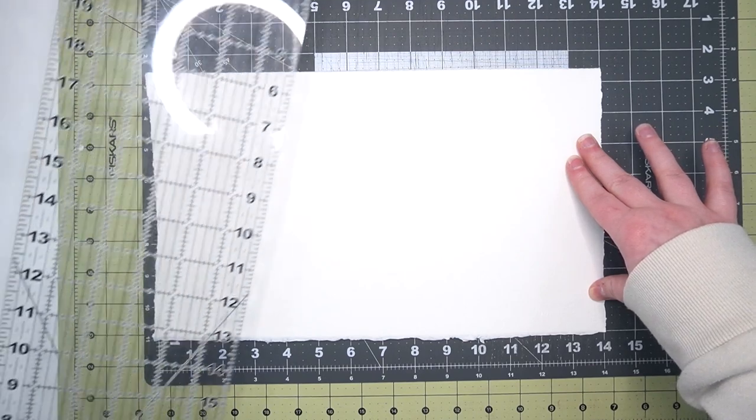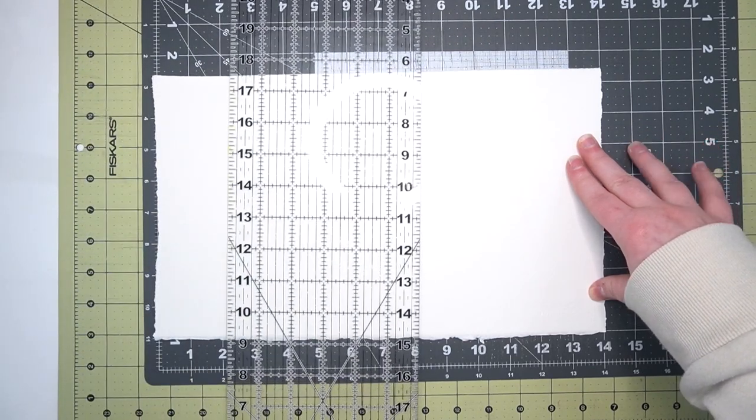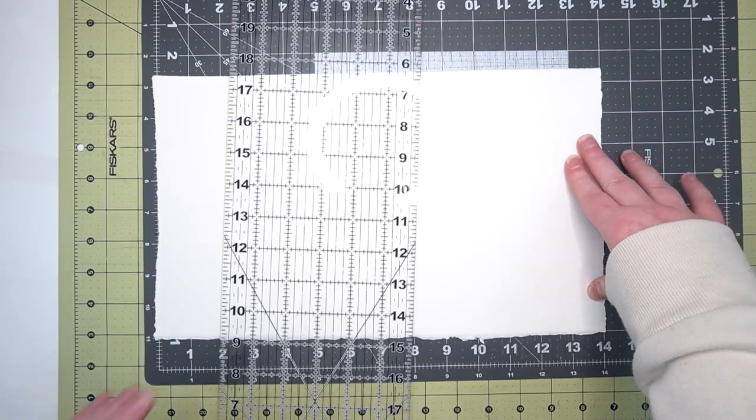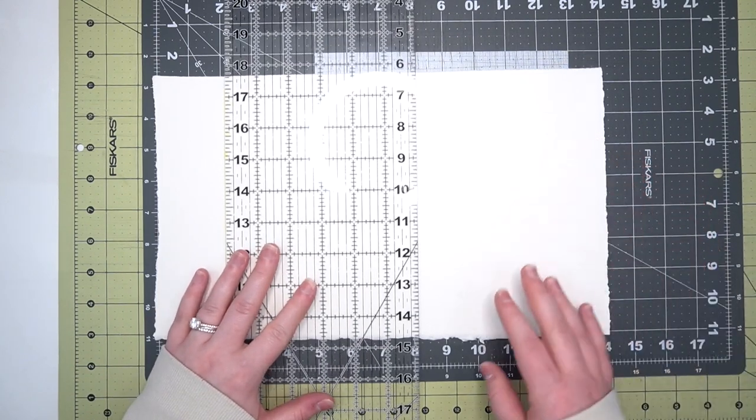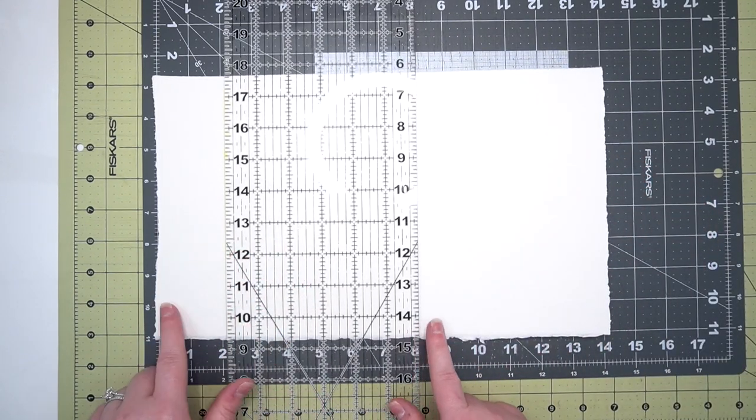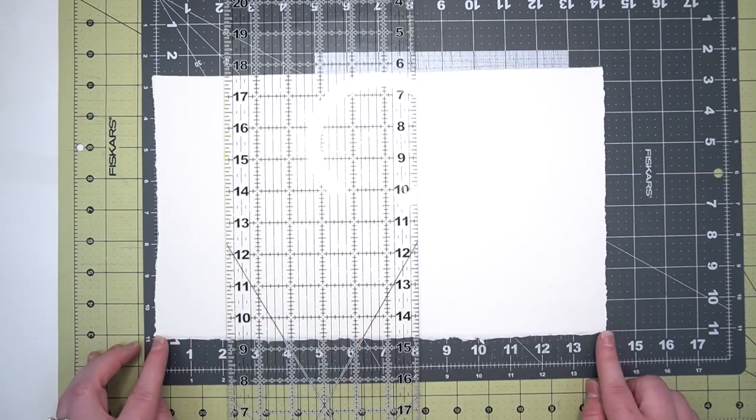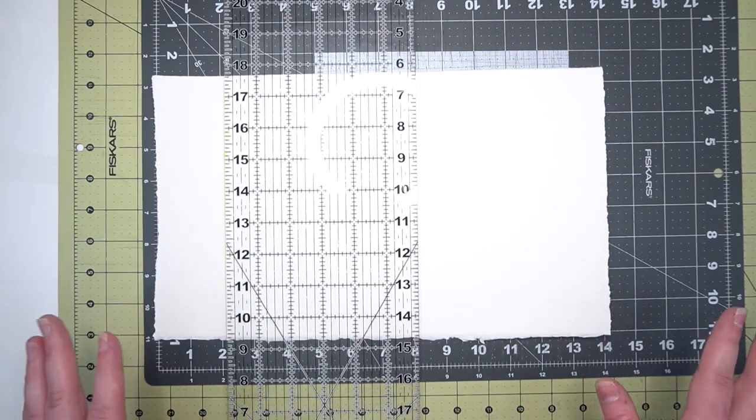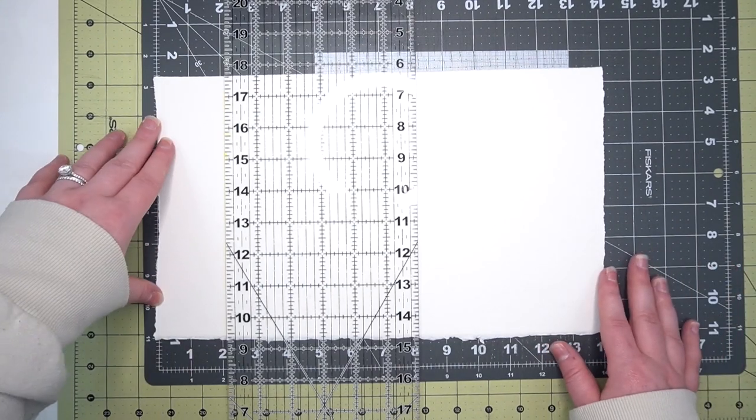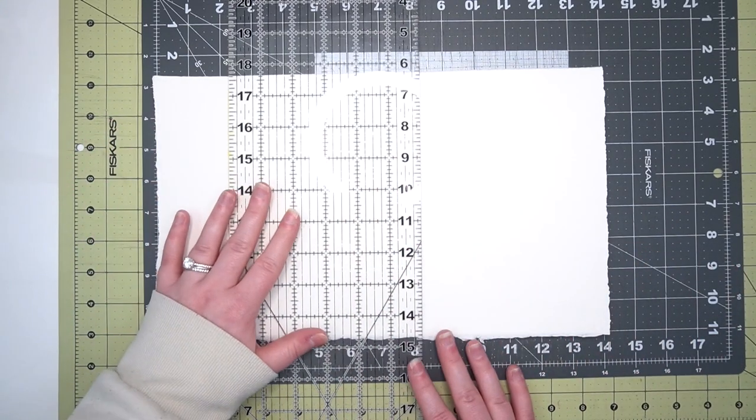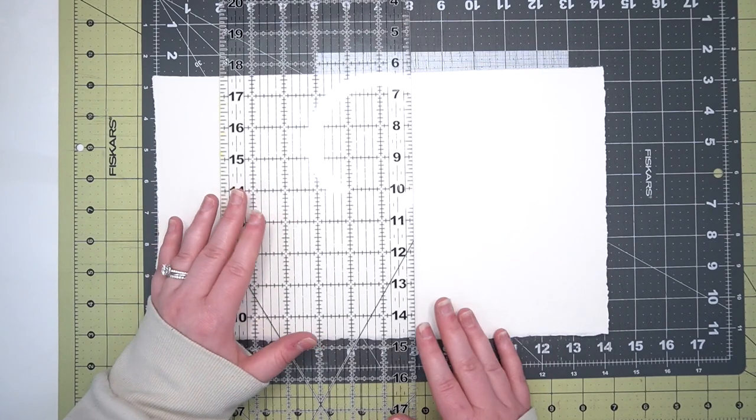So really what I'm going to do is place it down and make sure that my ruler is where I want it to be. Since I have the flat edge lined up here and I have my deckled edge lined up at the one inch mark, I know that I have a pretty straight alignment on my page, my mat, and with my ruler.